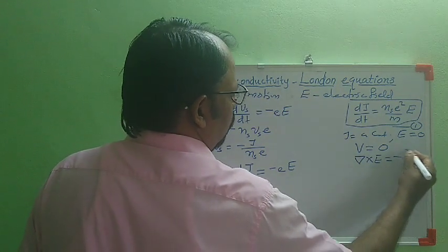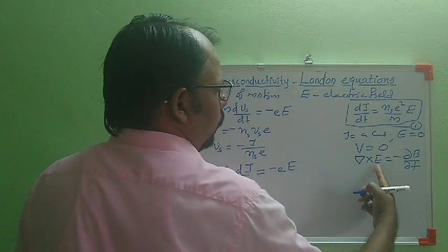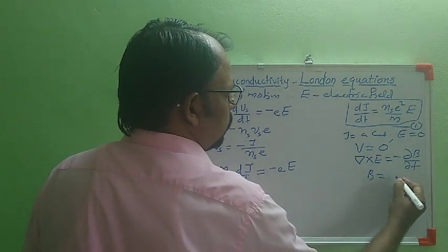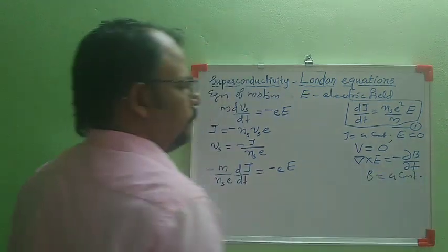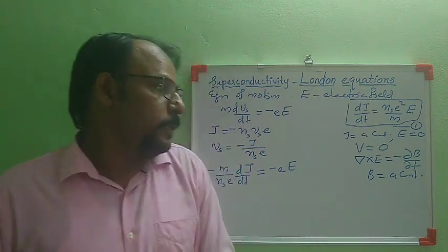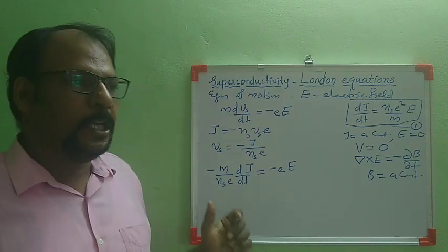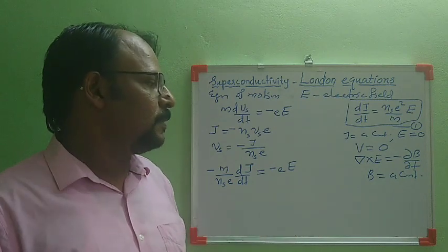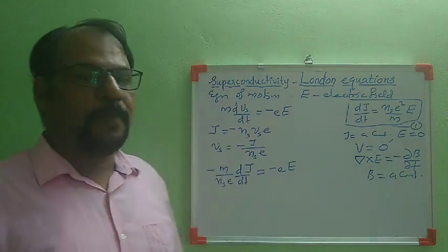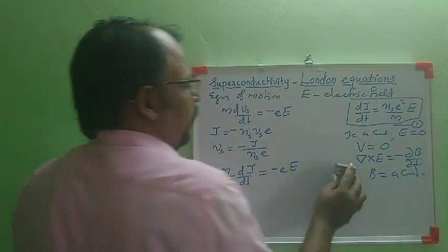From Maxwell's equations, if E = 0 then dB/dt = 0, so B equals a constant. This is contrary to the experimentally observed Meissner effect — in the Meissner effect, the magnetic field inside a superconductor is zero, but here it is equal to a constant. So this result contradicts the Meissner effect, and F. London and H. London modified this equation.